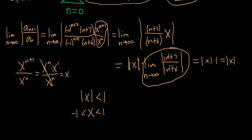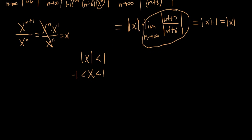The only thing left to do in this problem is to check the endpoints. I'm going to go ahead and rewrite the sum down here so we can see it on the screen. We'll go through and check negative 1 and 1. So the original series was the infinite sum as n runs from 0 to infinity of negative 1 to the n plus 1, over n plus 6, times x to the n.